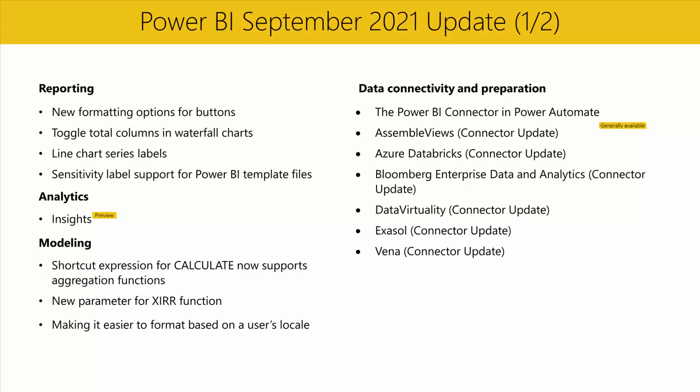Next, we've included a new option to create and format series labels in your line charts. Using the series labels option in the formatting pane, you can turn on and format labels that appear on the left or right sides of your series categories in line charts. These supplement the legend in providing clarity on which lines are associated with which categories. Rien will show us a demo of this feature.